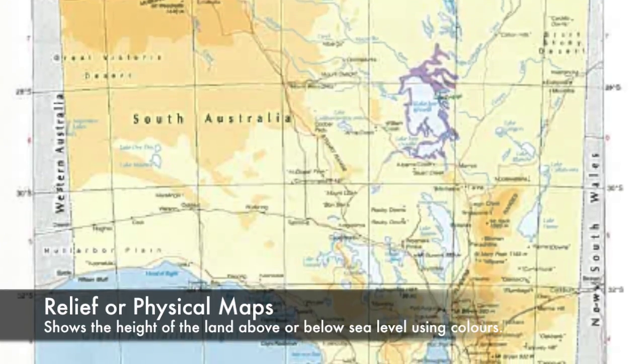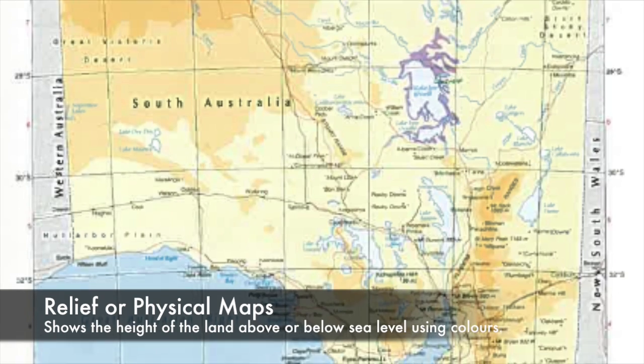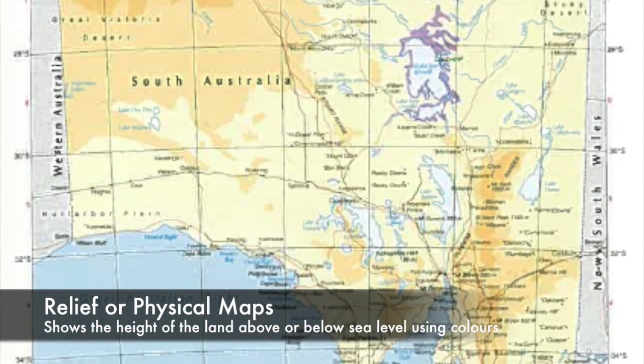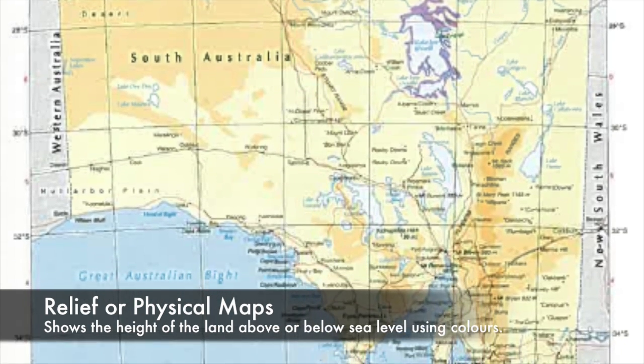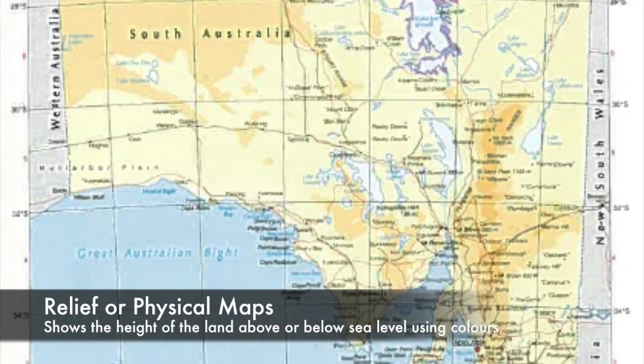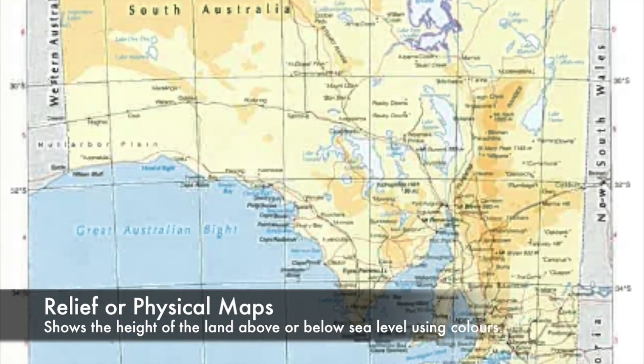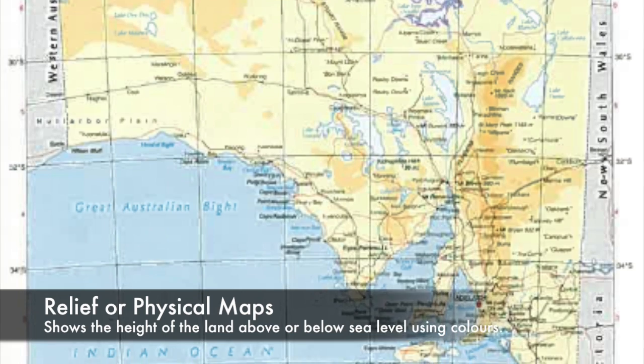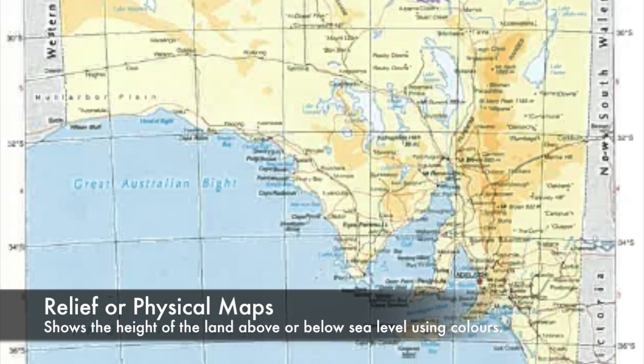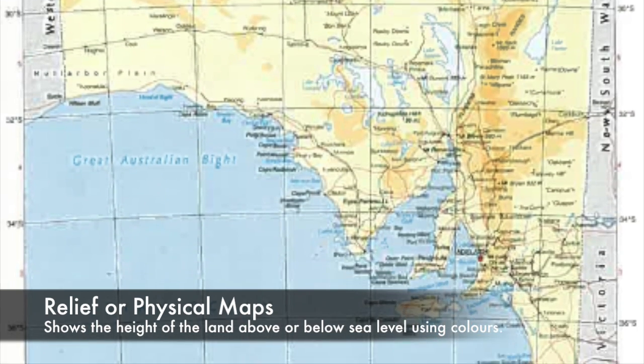Relief or physical maps show the height of the land above or below sea level using different colours, and illustrate natural features such as rivers, deserts, and lakes.